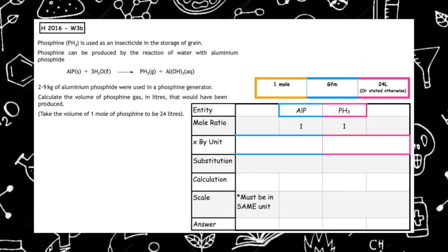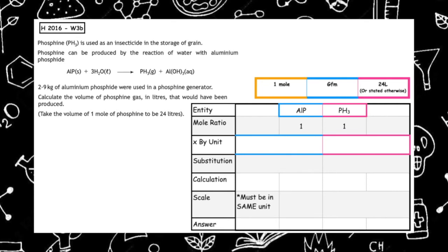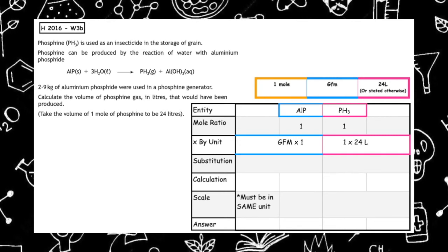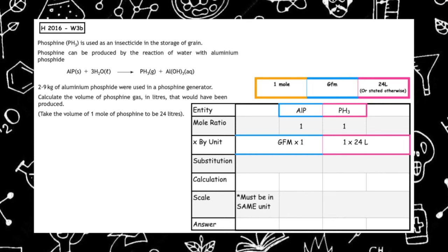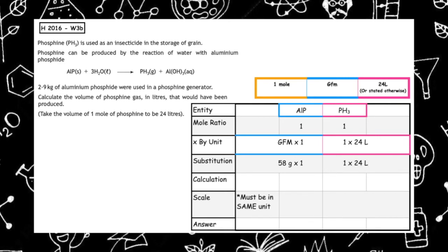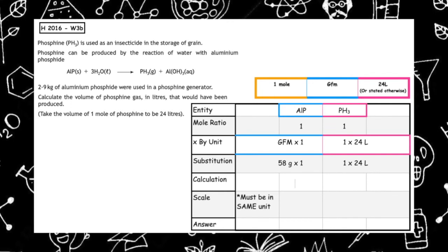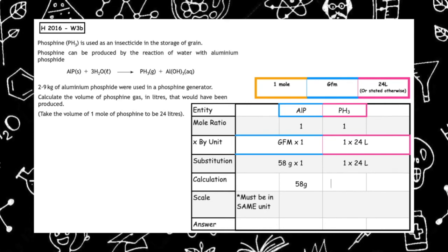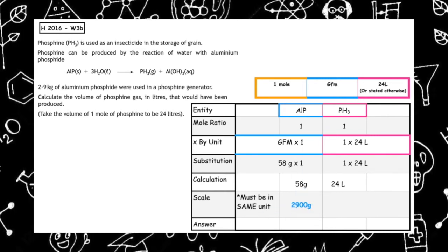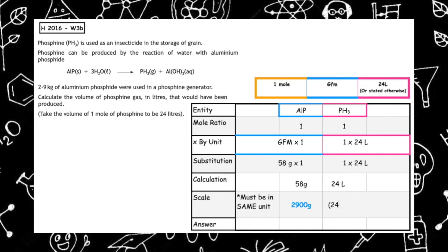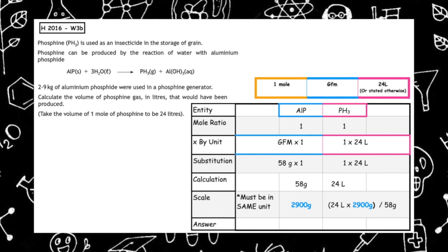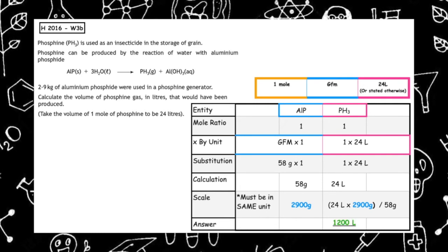We look at the information to decide which unit we're working in. We've been given a mass of aluminium phosphide, so we do GFM times 1, and we want to work out the molar volume, so we do 1 times 24 litres for the phosphine gas. The GFM of aluminium phosphide is 58, so 58 times 1 gives 1 times 24 litres. When we calculate that out, 58 grams produces 24 litres. We've been given 2.9 kilograms, so we convert to 2,900 grams. Cross multiplying: 24 litres times 2,900 grams divided by 58 gives a total volume of 1,200 litres.